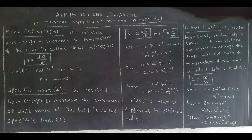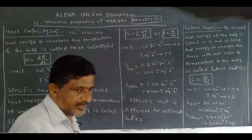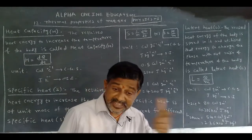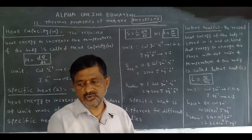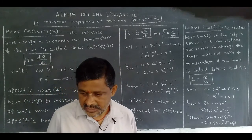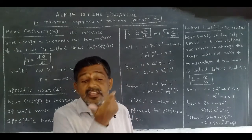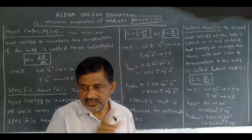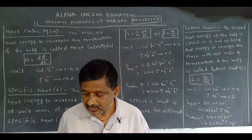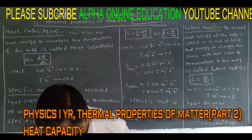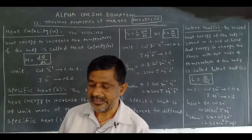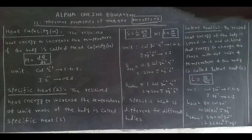The calorimeter works under one principle called the principle of mixture. What is the principle of mixture? The loss of heat energy of any object is equal to the gain of heat energy of another object. Energy is neither created nor destroyed — it converts from one form to another. That is why if any object loses energy, another object gains the energy. This is the principle of mixture on which the calorimeter works.